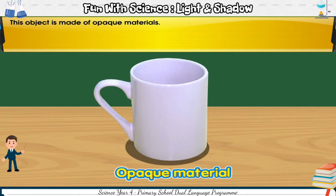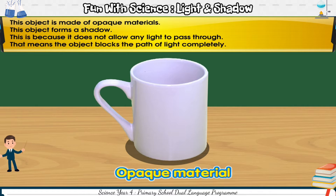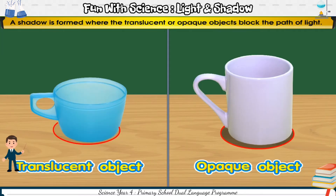This object is made of opaque material. It forms a shadow because it does not allow any light to pass through — that means the object blocks the path of light completely. A shadow is formed where translucent or opaque objects block the path of light.